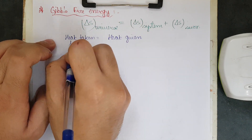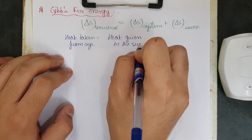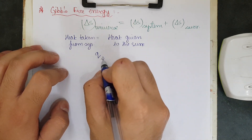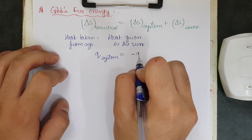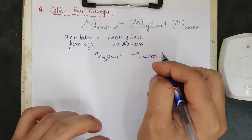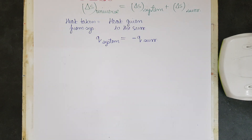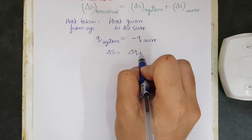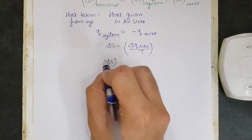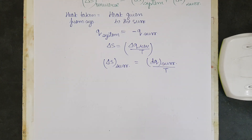Heat taken out from the system goes to the surroundings. In mathematical terms, the heat of the system equals minus the heat of the surroundings — the magnitude is the same but the negative sign indicates direction of heat flow. Therefore, delta S of the surroundings equals DQ of the surroundings upon T, and DQ of the surroundings equals minus DQ of the system.